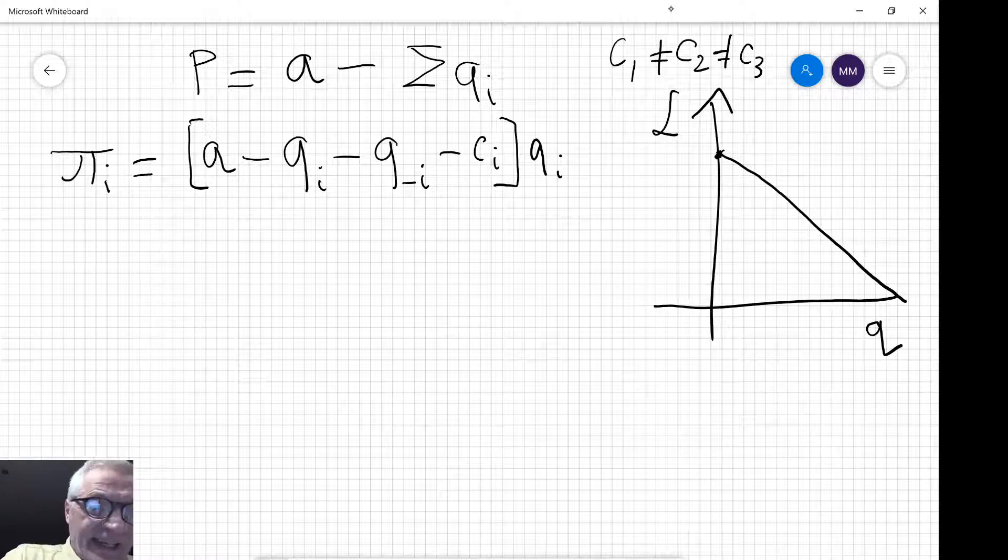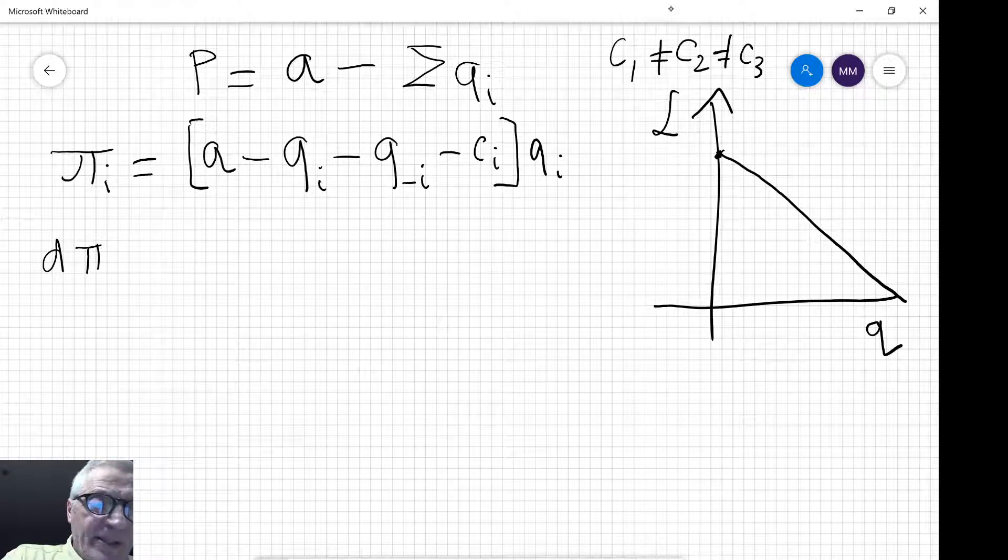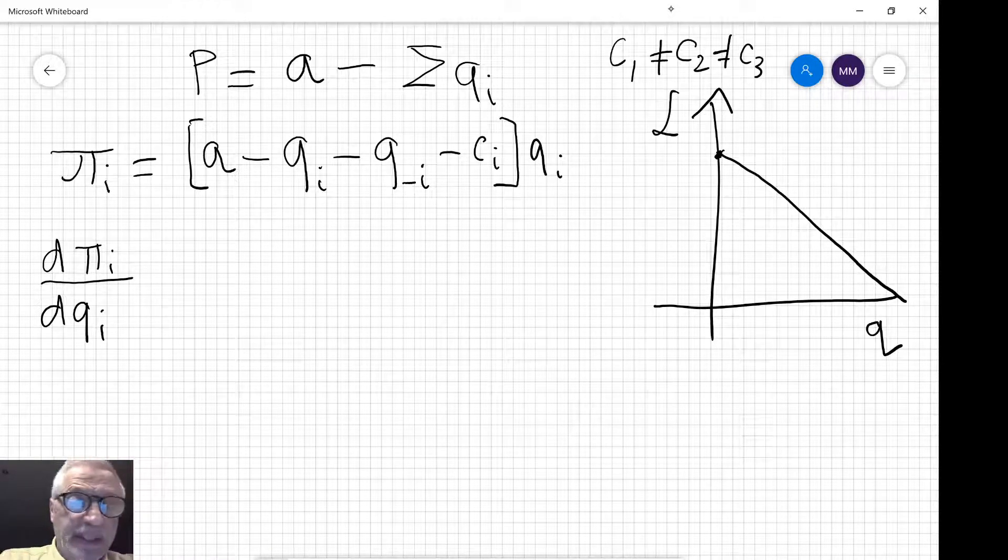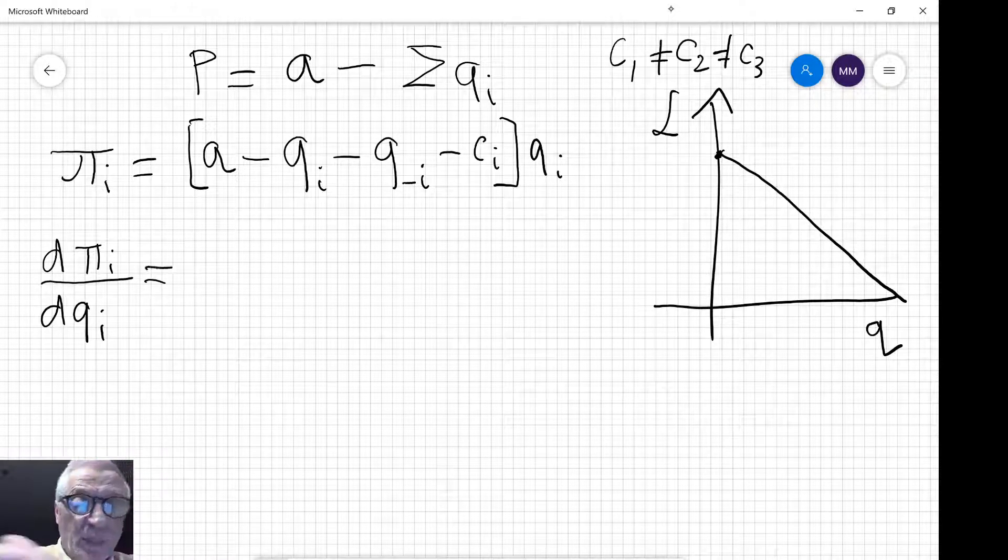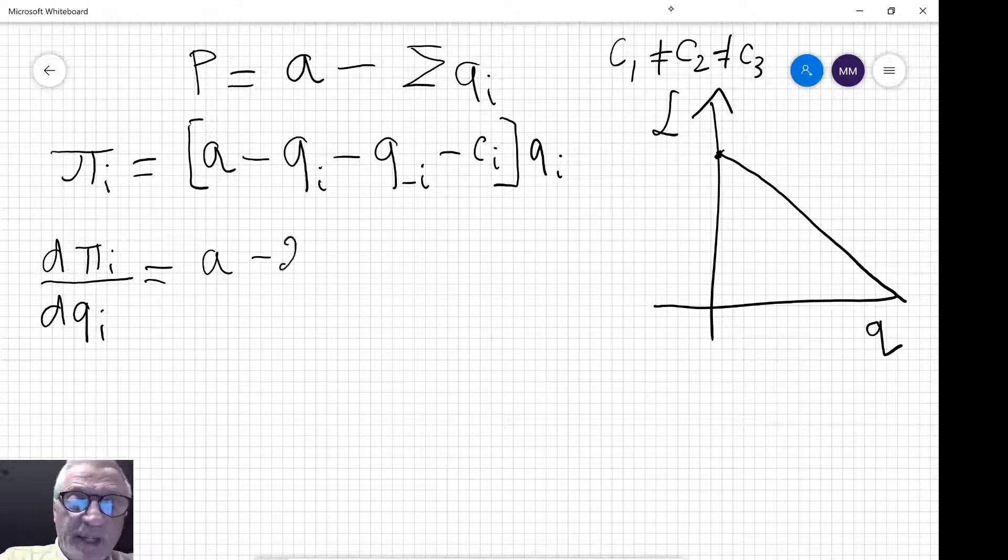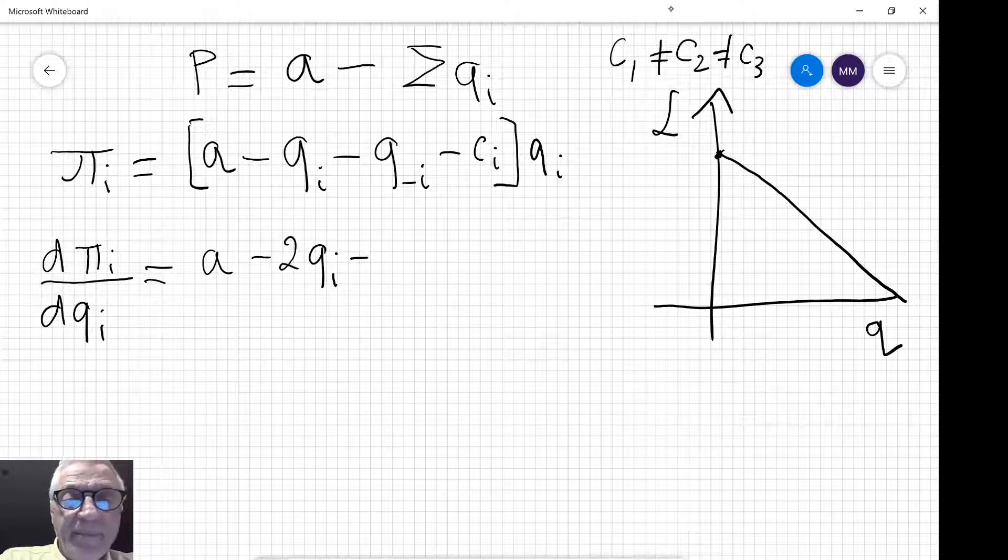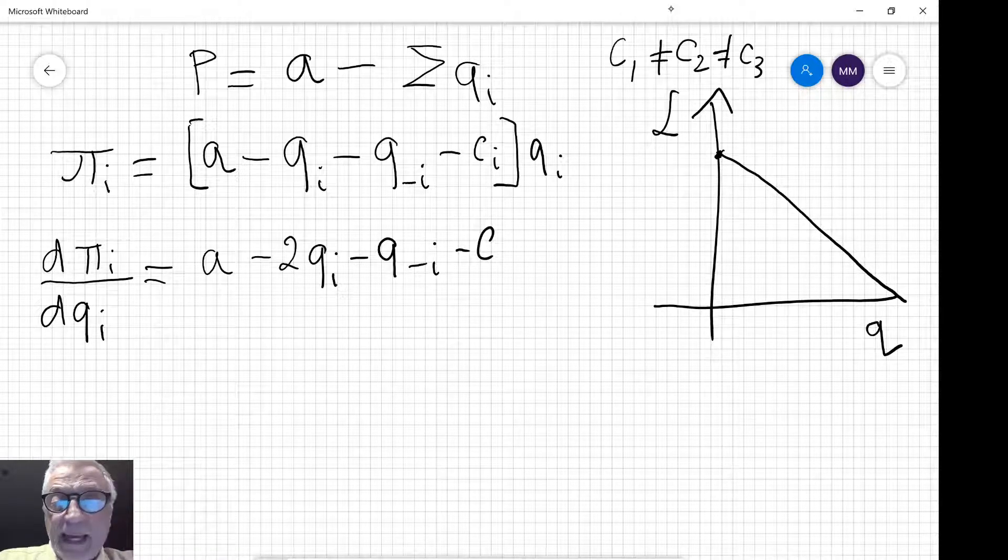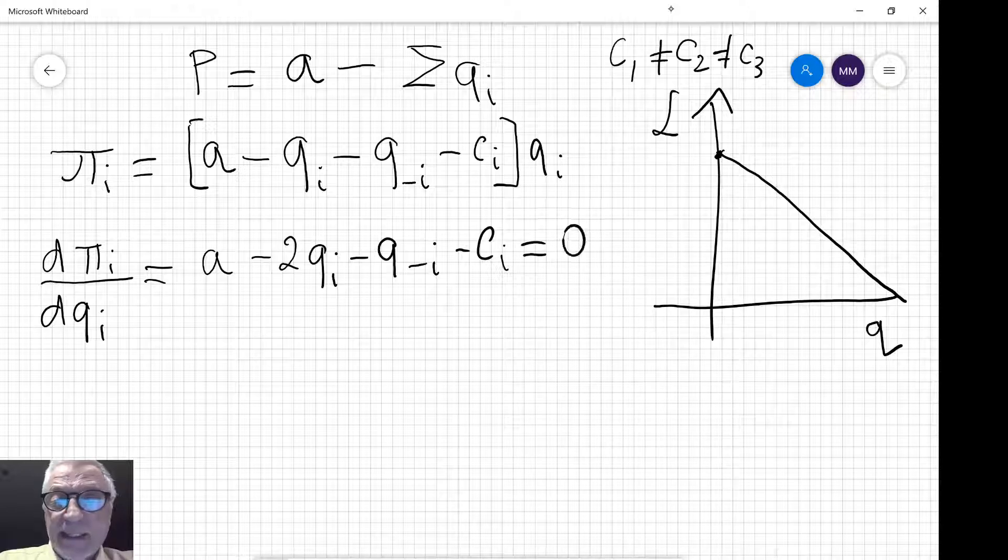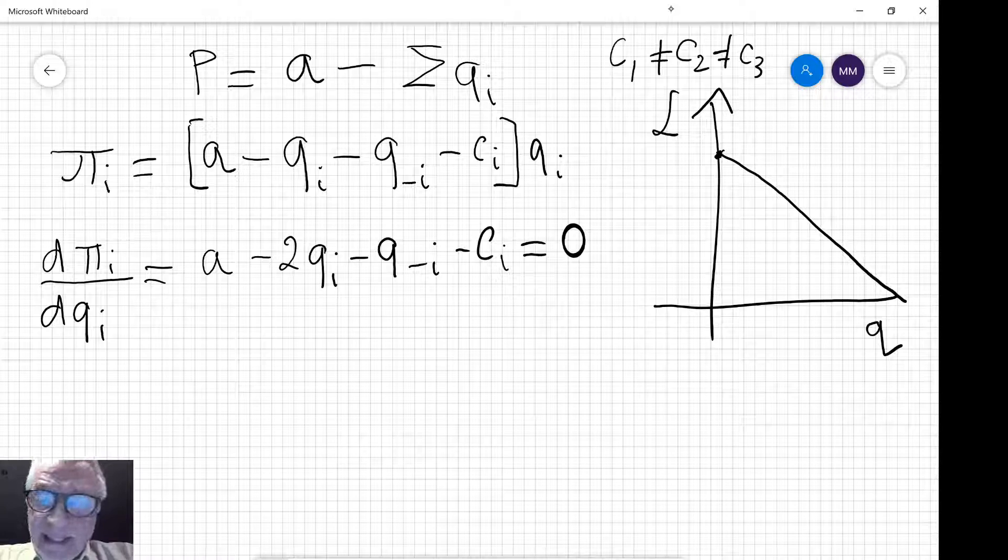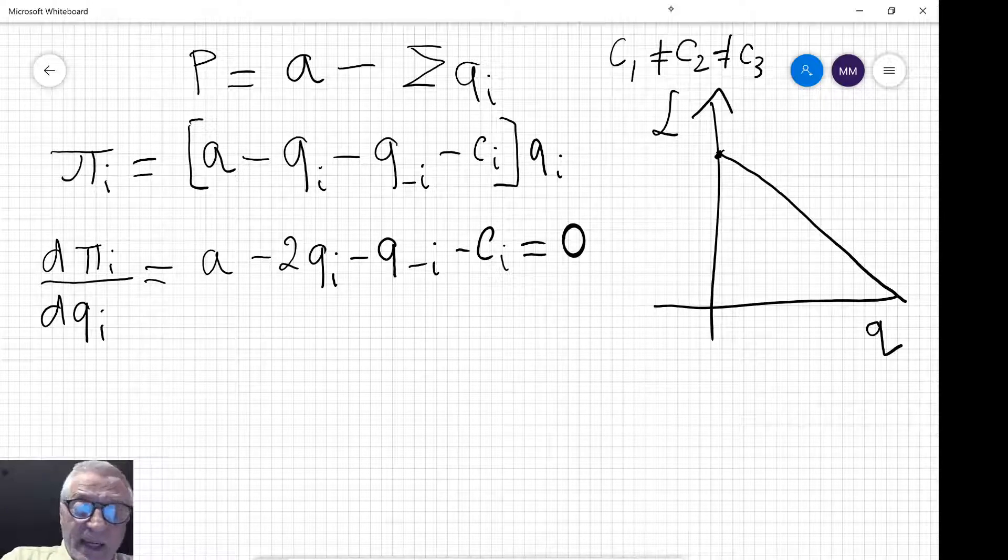Next we want to maximize this profit, so we are going to find the first order condition. So we differentiate with respect to the output of firm I and what we get is this well-known result.